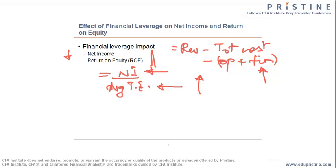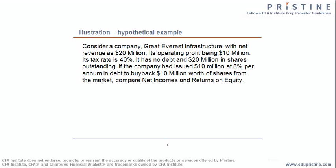Let us see an illustration that solidifies our understanding. We have a company, Great Everest Infrastructure, which has a net revenue of 20 million. Its operating profit is given as 10 million and the tax rate is also provided. It has absolutely no debt and 20 million in shares outstanding. If the company had borrowed debt of 10 million at the rate of 8% per annum to buy back a number of shares.